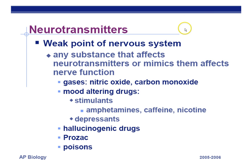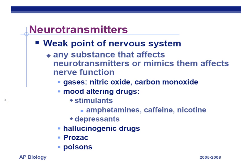Neurotransmitters are the weak point in the nervous system — you have to cross a gap. So a lot of things that affect that gap will dramatically affect the nervous system. Things like nitric oxide, carbon monoxide, stimulants, amphetamines, caffeine, nicotine, and depressants all have an effect on neurotransmitters. Things like sarin gas, which is a chemical weapon, basically shuts down or blocks the neurotransmitters, so you can't conduct nerve impulses from your brain to the rest of your body — which is not good if you need to send signals from your medulla to your lungs to breathe.